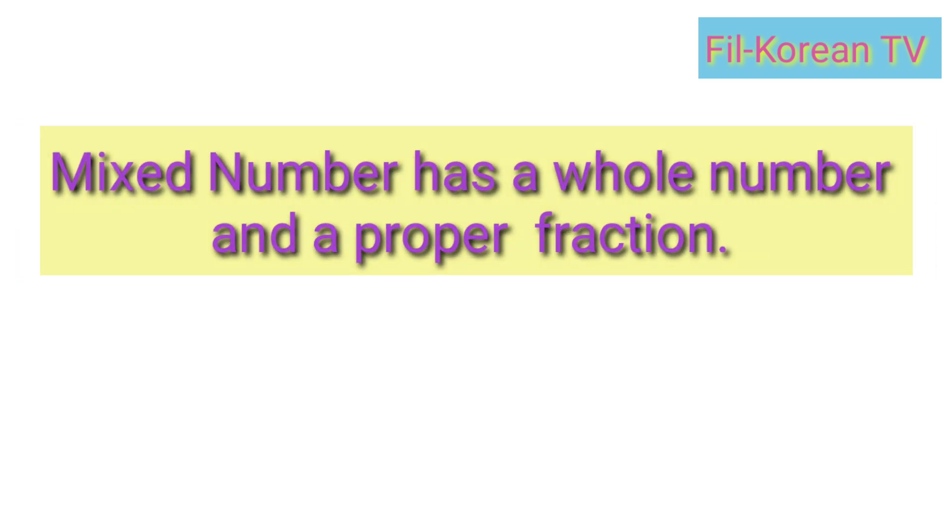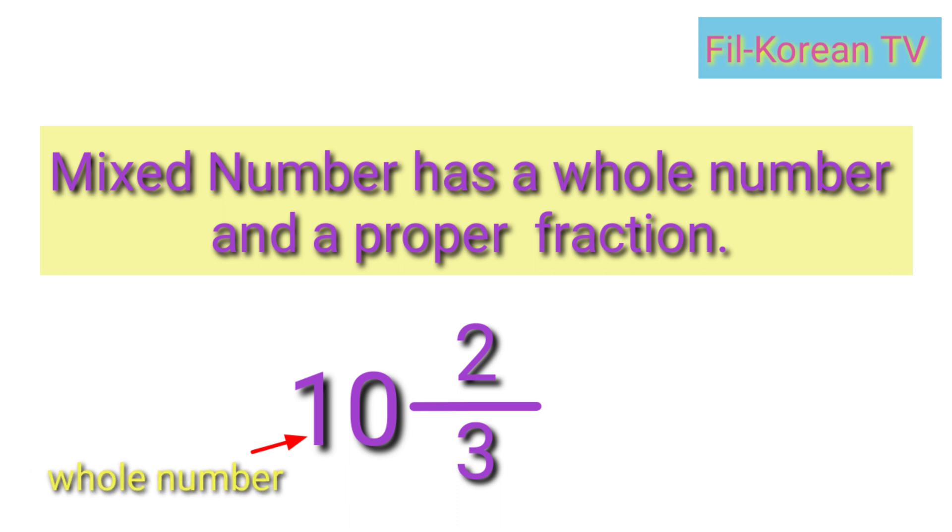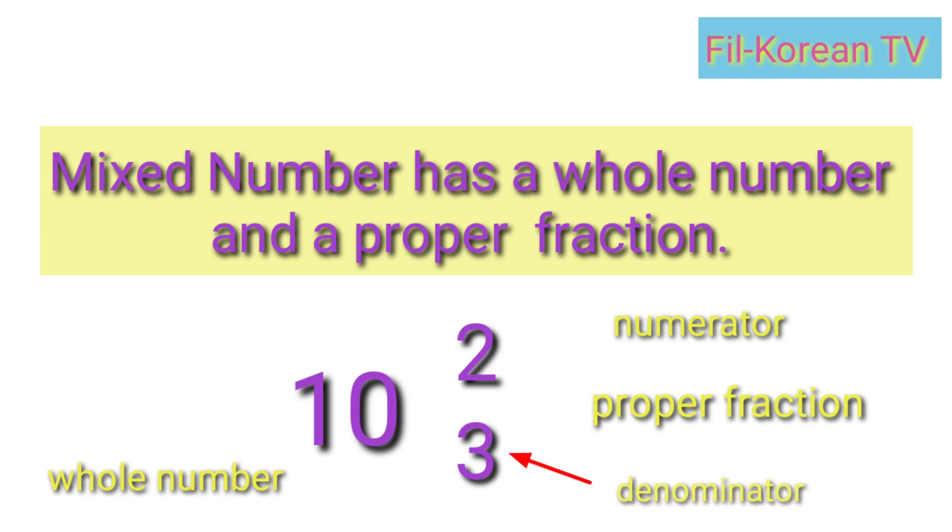Let's start the lesson by knowing the mixed number and improper fraction. When we see mixed number, it has a whole number and a proper fraction, like ten and two-thirds. Ten is a whole number and two-thirds is a proper fraction, in which the numerator two is less than the denominator three.